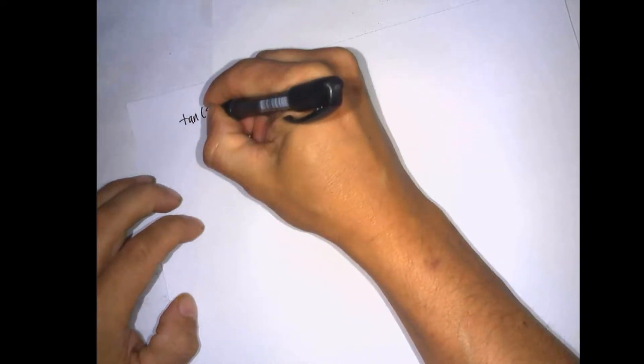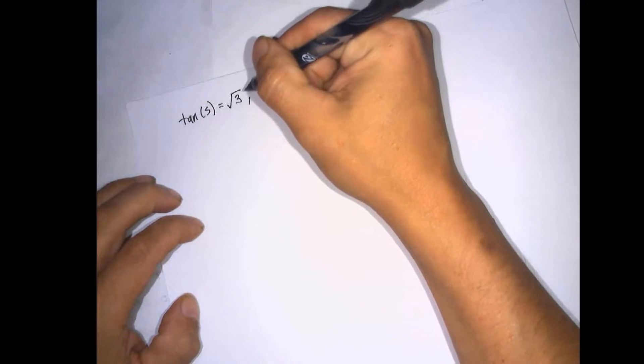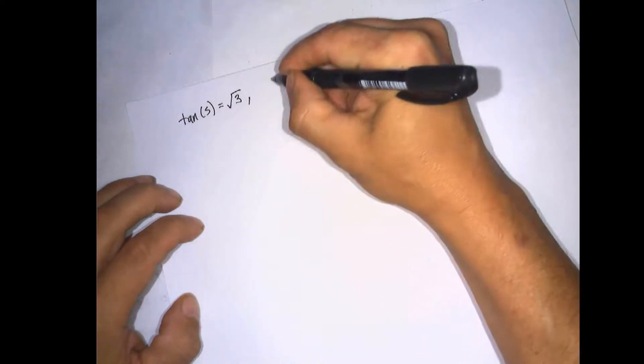Alright, so this first problem is to find tangent of s equals square root of 3, and it's between pi and 3 pi over 2.